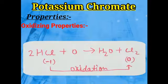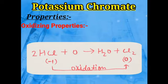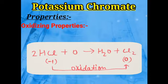Another example: HCl gas reacts with oxygen to give H₂O and Cl₂. In HCl, the oxidation state of chlorine is −1, and in the Cl₂ molecule it becomes 0 (since neutral molecule has oxidation state 0). So chlorine's oxidation state changed from −1 to 0 — oxidation of Cl occurred.